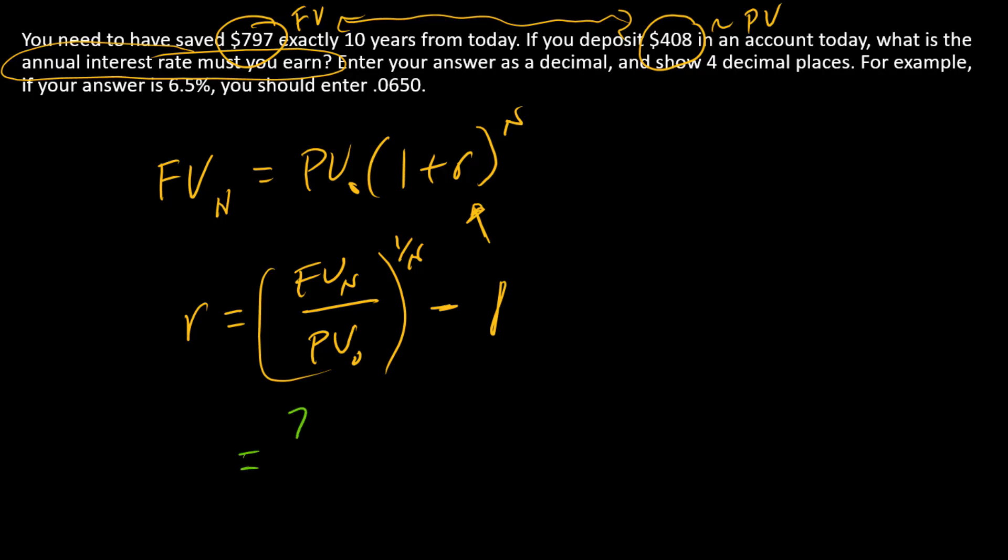We have 797 in the numerator, 408 in the denominator. We're going to raise that to the 1 over 10 power and subtract 1. Use your calculator to work that out.